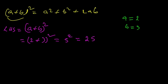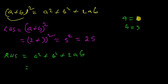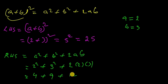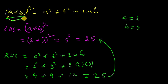Now check the right-hand side. Right-hand side equals A squared plus B squared plus 2 times of AB. Substituting: A is 2, so A squared is 4; B is 3, so B squared is 9; and 2 times of A times B equals 2 times 2 times 3 equals 12. So 4 plus 9 plus 12 equals 25. Therefore (a + b) whole square equals a squared plus 2ab plus b squared — proved.